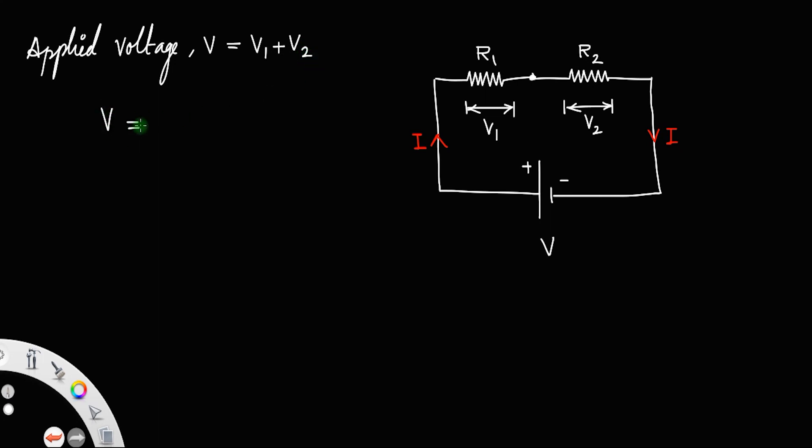That is, V is equal to, you know, V1 will be by Ohm's law voltage equal to current into resistance. Therefore, IR1 plus V2 will be IR2. Since current into resistance gives the voltage, you do not have to write I1 and I2 because the current remains the same. So this can be simplified as taking the I outside I into R1 plus R2. Let us say this as equation number 1.